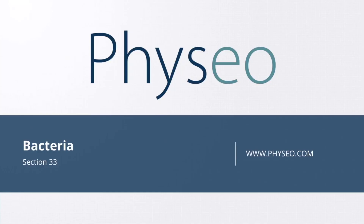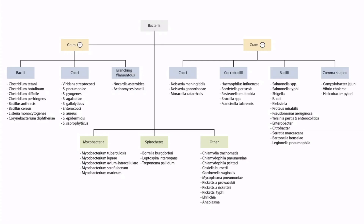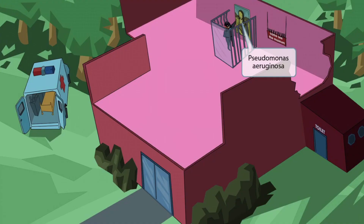Welcome to section 33 of Bacteria. This is our Bacteria overview figure, and in this video we'll be discussing Pseudomonas aeruginosa. This scene takes place in a museum of the famous Mona Lisa painting. This isn't just any ordinary day at the museum — it's the day an attempted robbery of the painting is occurring. Mona sounds like Pseudomonas, so we've used it here to help you remember that this image is all about Pseudomonas aeruginosa.